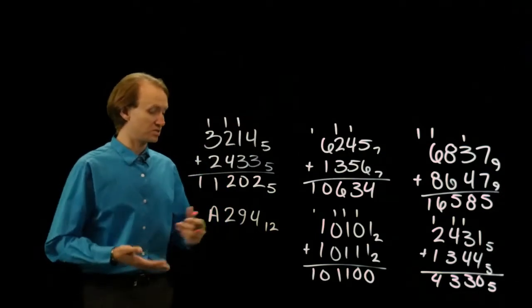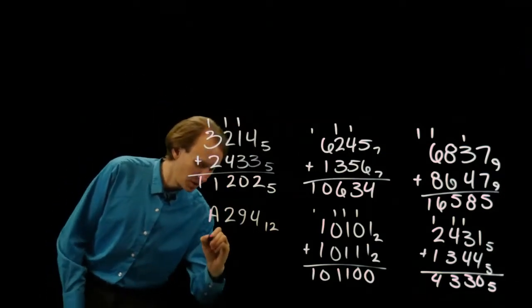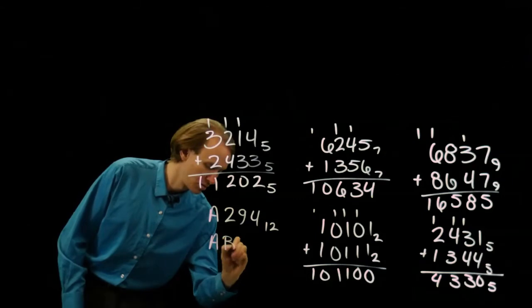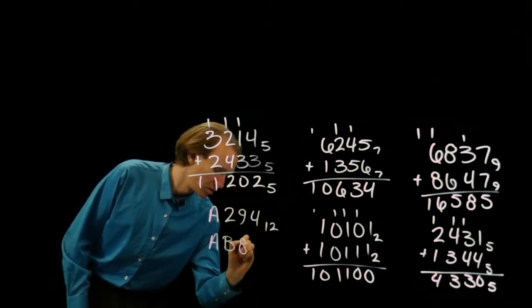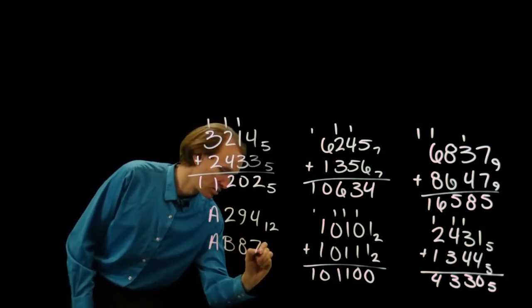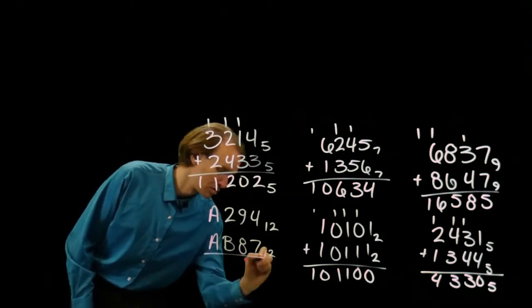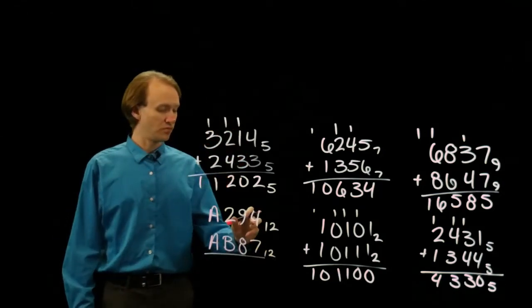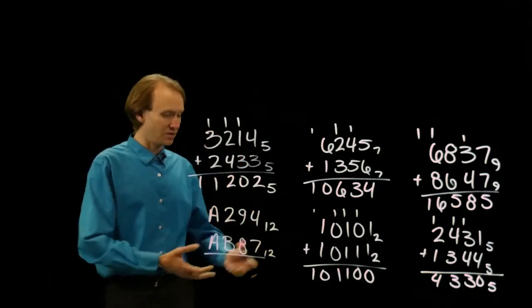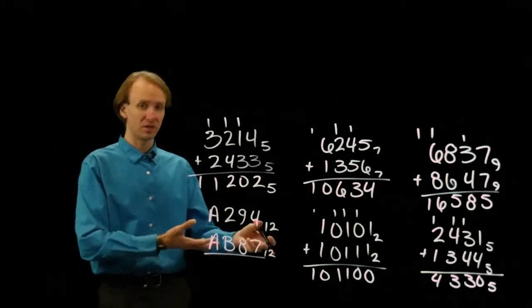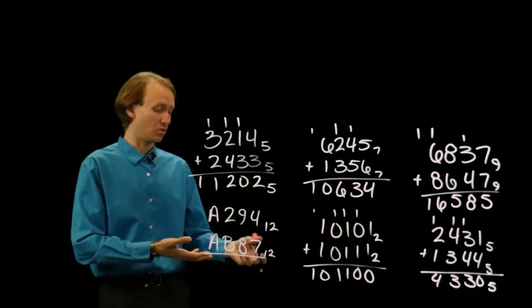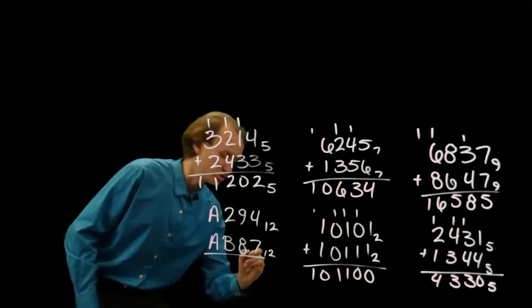I can also do things in, say, base 12. So, 4 plus 7 is 11, and 11 is smaller than 12. So, 11 is one of the digits that I've got available, and that's the digit B.